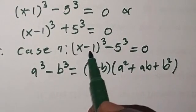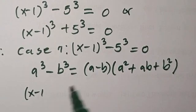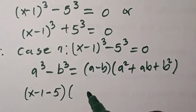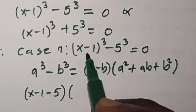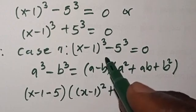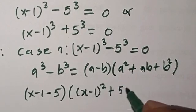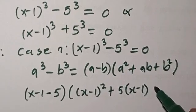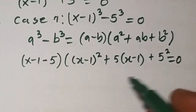So if you remember that, we're going to apply it here. We take x minus 1 to be a. So this is going to be x minus 1, then minus 5, times x minus 1 squared plus a times b — that is x minus 1 and 5, which will be 5 times bracket x minus 1 — plus 5 squared. Then equals 0.